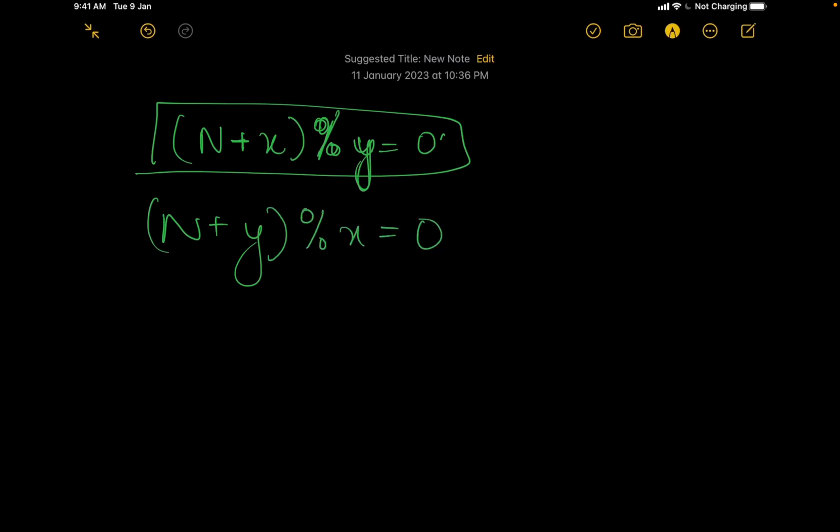What they are saying is that we have to come up with the integer n such that n plus x modulo y equal to 0. When they are saying it should be divisible by y, this is what they mean. If it is divisible by y, its mod would be 0. Also, n plus y modulo x should be equal to 0.